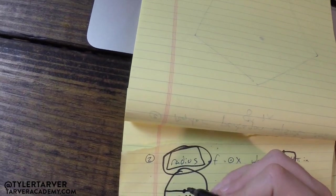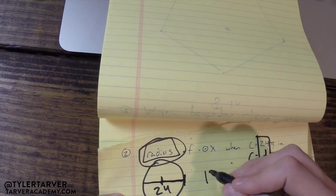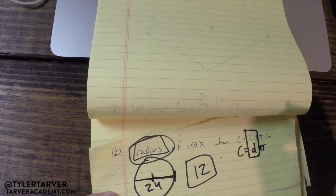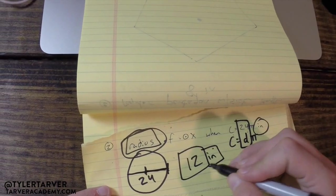Here we go. Diameter is all the way across, it's 24. We know radius is half of that, so half of 24 is 12. Find the radius: it's 12 inches, and you're done.